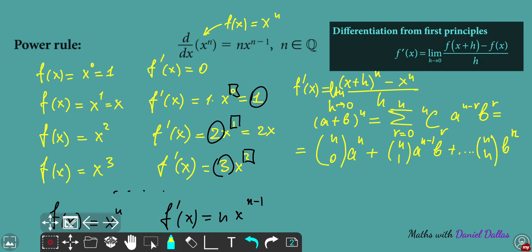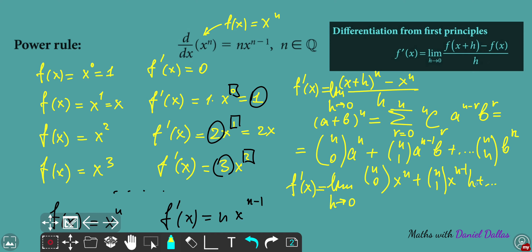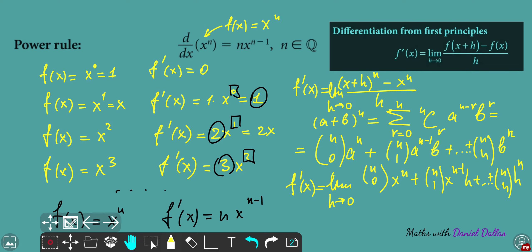Let's apply this to our case: (x plus h) to the power of n. So f prime of x equals the limit as h approaches zero, and applying the binomial expansion I get: n choose 0 times x to the power n, plus n choose 1 times x to the power n minus 1 times h, plus terms with increasing powers of h squared, h cubed, and finally n choose n times h to the power n — since x is raised to the power of zero.